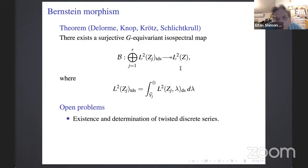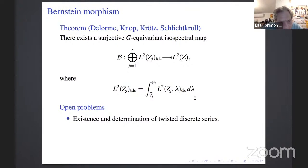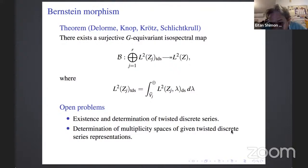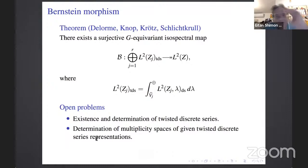There are many open problems: the rank condition for describing when we have discrete series, the construction of twisted discrete series, and determining multiplicity spaces — whether a given twisted discrete series actually occurs in our decomposition. That's the state of the art on decomposing Z via its degenerations.